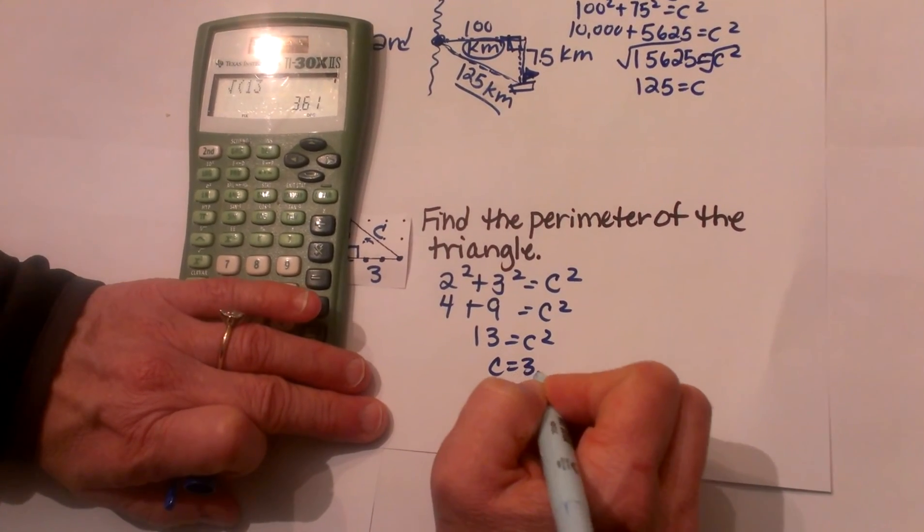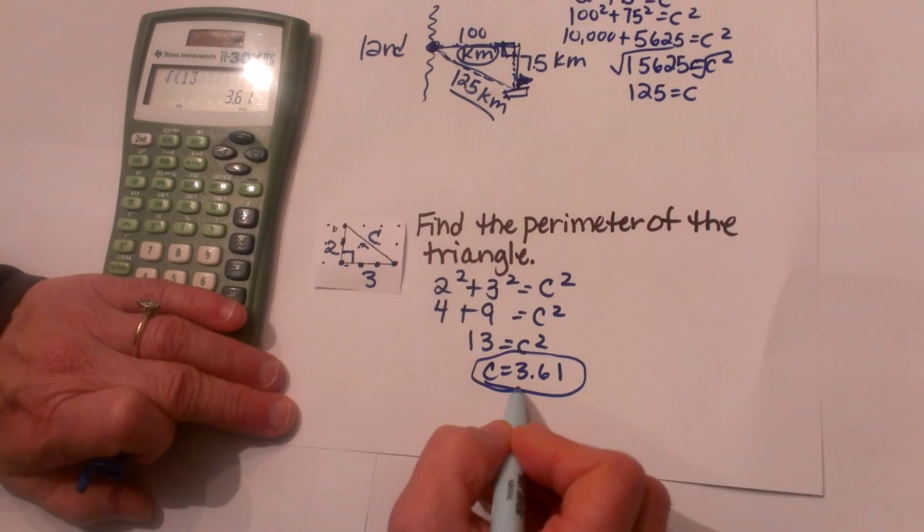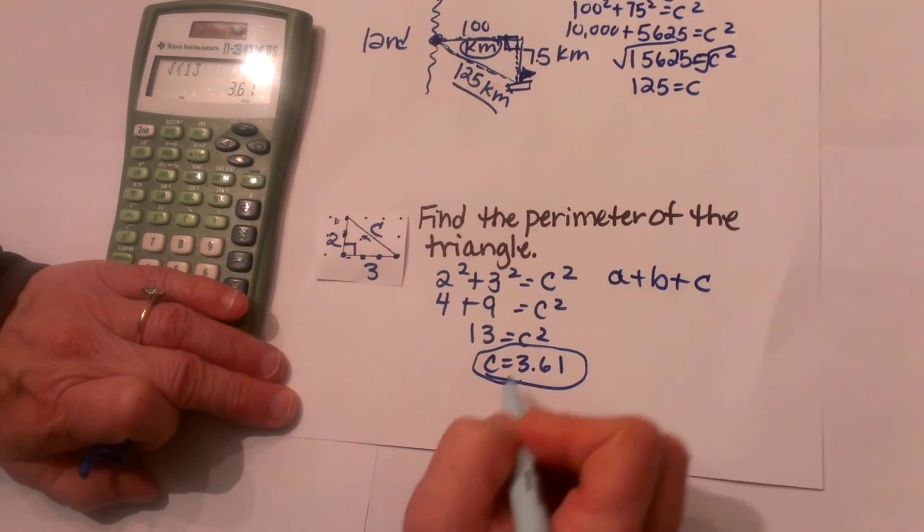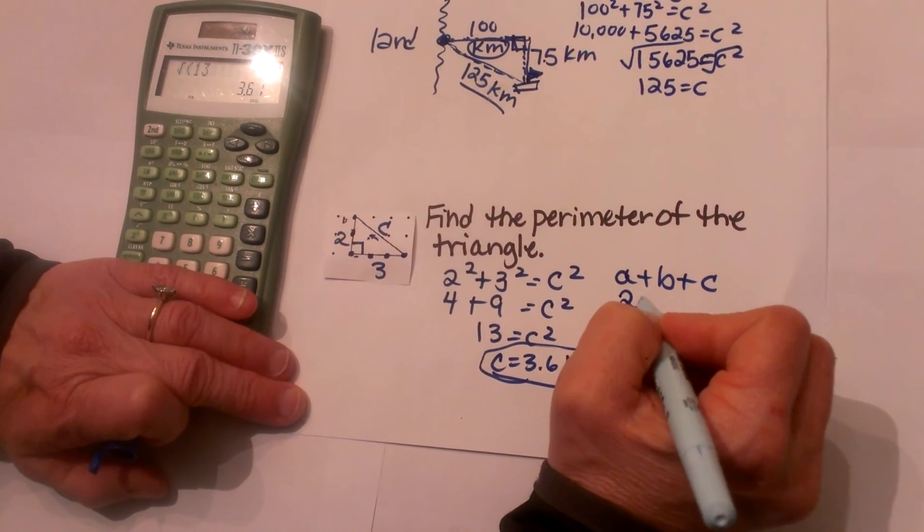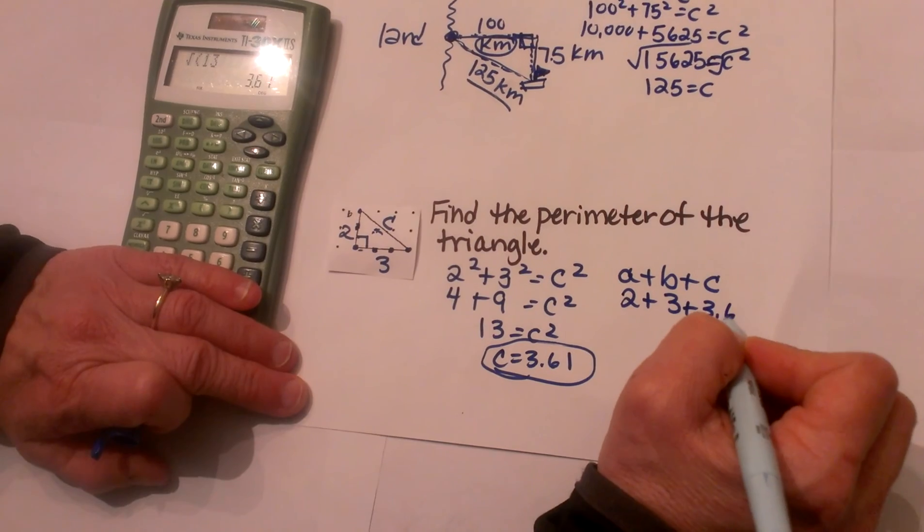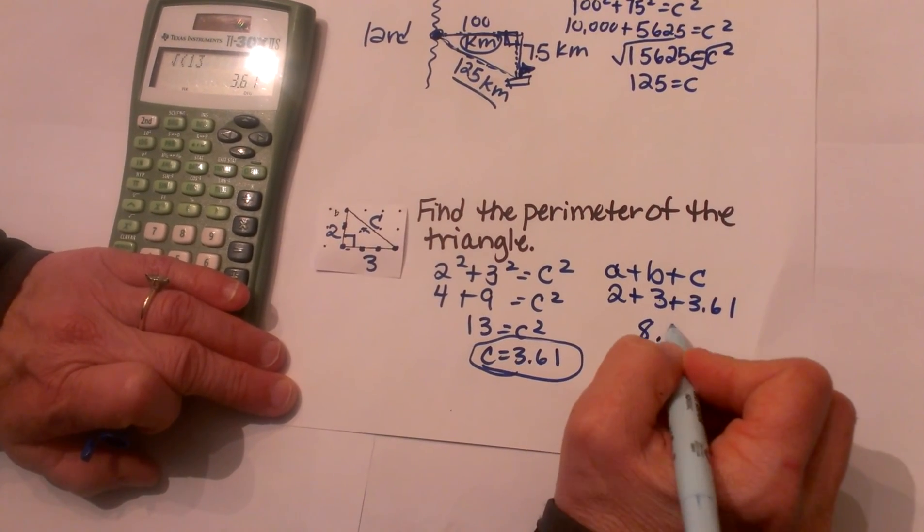So c is equal to 3.61. Now we are not finished because we have to find the perimeter, which means we have to add a + b + c together. So let's take a which is 2, b which is 3, and c which is 3.61. So that is going to be 8.61 units.